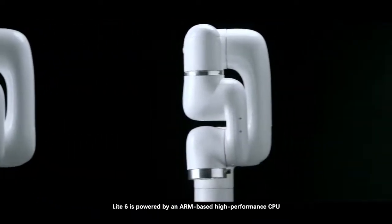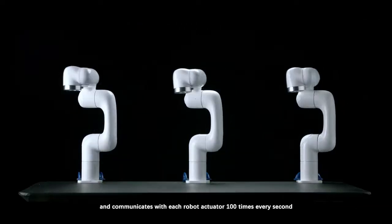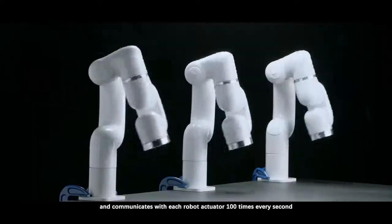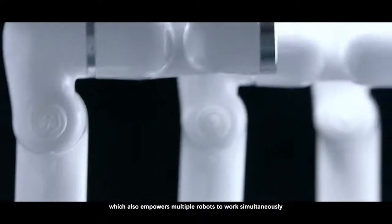Lite 6 is powered by an ARM-based, high-performance CPU and communicates with each robot actuator 100 times every second, which also empowers multiple robots to work simultaneously.